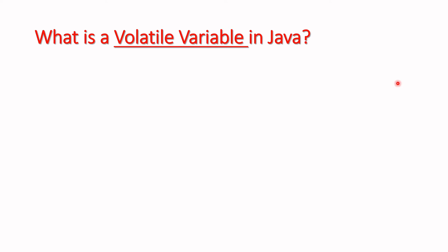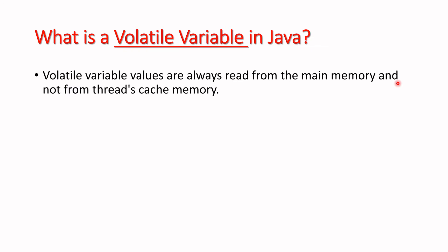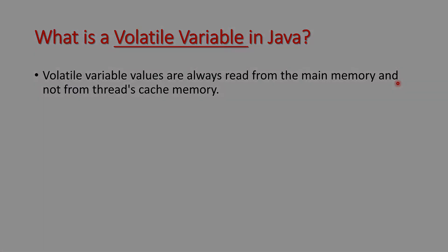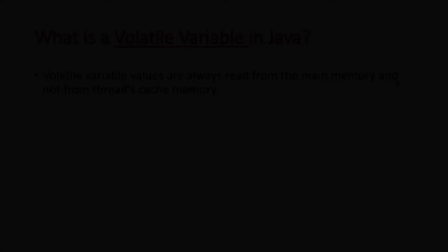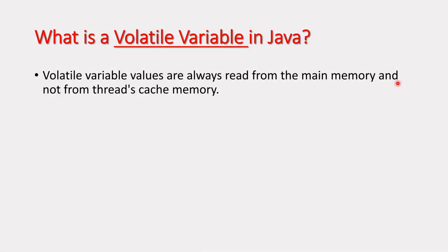Where do we use the volatile variable? You already know if you've gone through my multi-threading lecture. Let's understand: volatile variables always read from the main memory, not from the thread's cache memory. This topic belongs to threading and multi-threading.